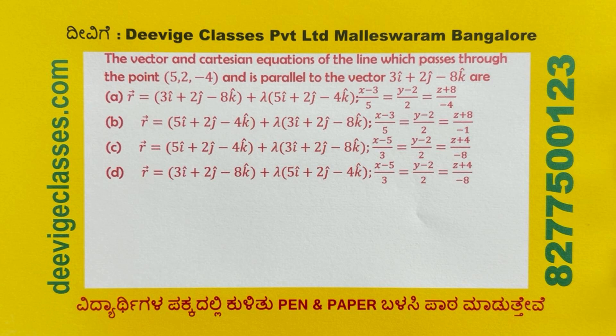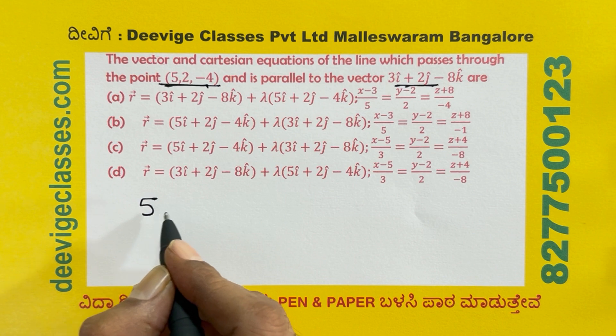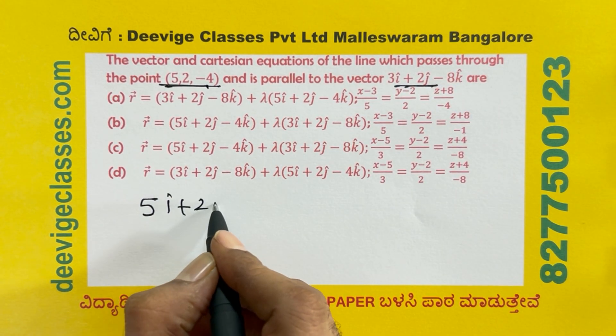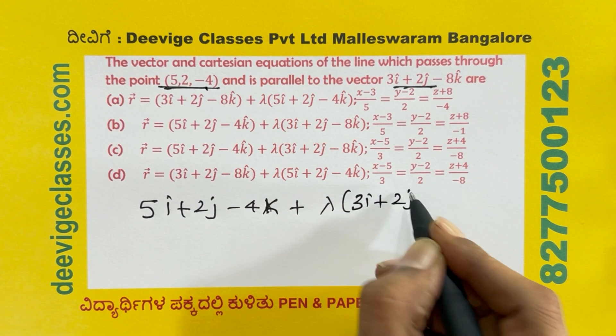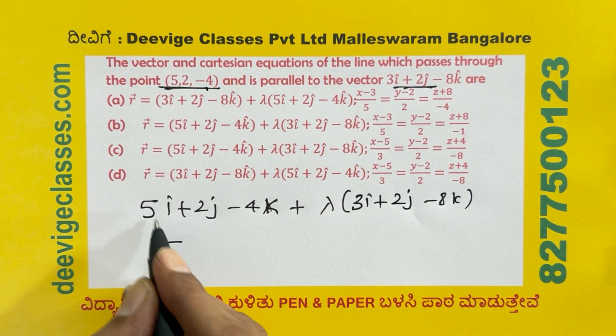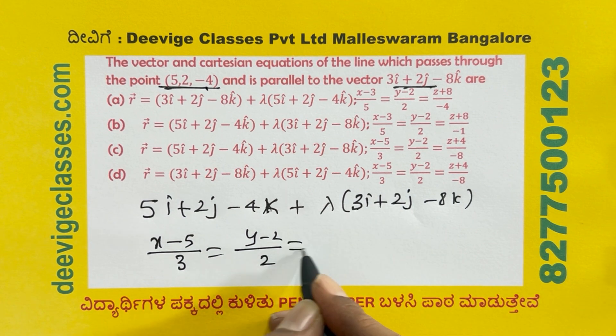The vector and Cartesian equation of the line which passes through the point (5, 2, minus 4) and is parallel to the vector 3i plus 2j minus 8k. The vector equation is: R = (5i plus 2j minus 4k) plus lambda (3i plus 2j minus 8k). The Cartesian form is: x minus 5 over 3 equals y minus 2 over 2 equals z plus 4 over minus 8.